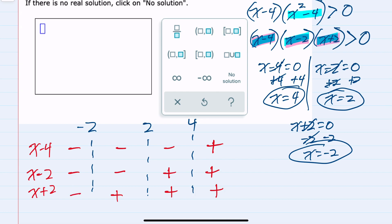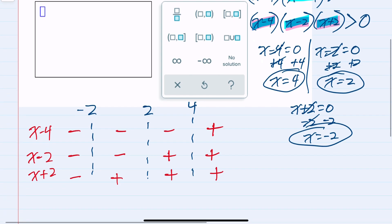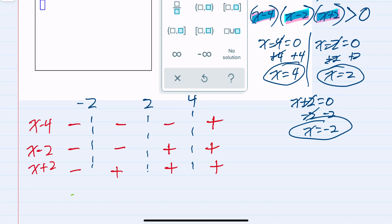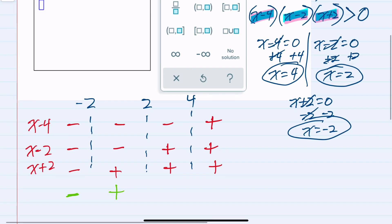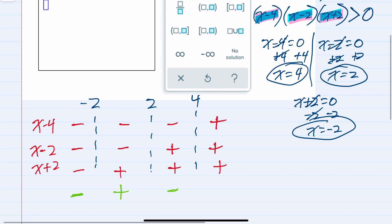And since this inequality has these three factors being multiplied, when I multiply three negatives, my result is negative. Two negatives and a positive being multiplied would give me a positive. One negative being multiplied with two positives would be negative. And three positives being multiplied would be positive.